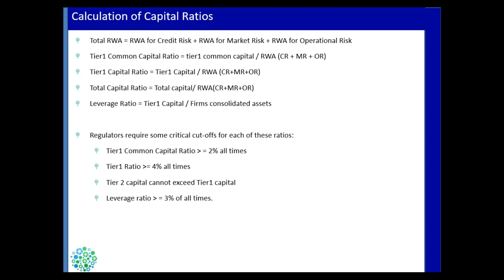These calculations will be covered more while discussing Basel and building models, but keep them as definitions for now since they are standard in any bank's capital calculations. The total Risk Weighted Asset is the sum of CR (credit risk), MR (market risk), and OR (operational risk). Tier 1 Common Capital Ratio is Tier 1 Common Capital divided by RWA; similarly there are Tier 1 Capital Ratio and Total Capital Ratio. There is also the leverage ratio.